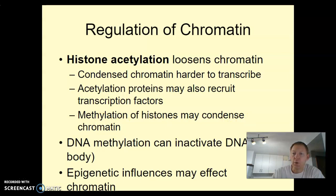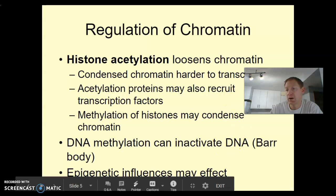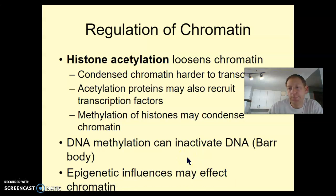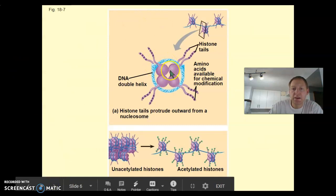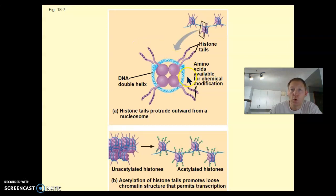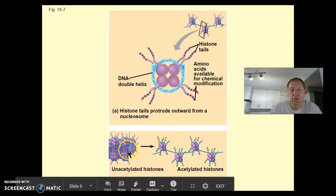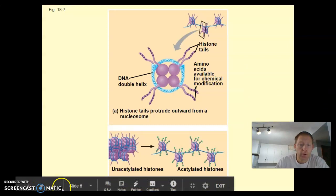A good example of methylation is the Bar body situation we talked about with calico cats, where they basically block one of the X chromosomes from being used. Many different environmental factors may affect what gets transcribed and translated. Here you can see histones with DNA coiled around them — DNA does two coils around these histones. This is an example of unacetylated histones where there's no way we could ever transcribe this DNA, versus acetylated histones where it's more open and we could get this DNA to transcribe and eventually be translated.